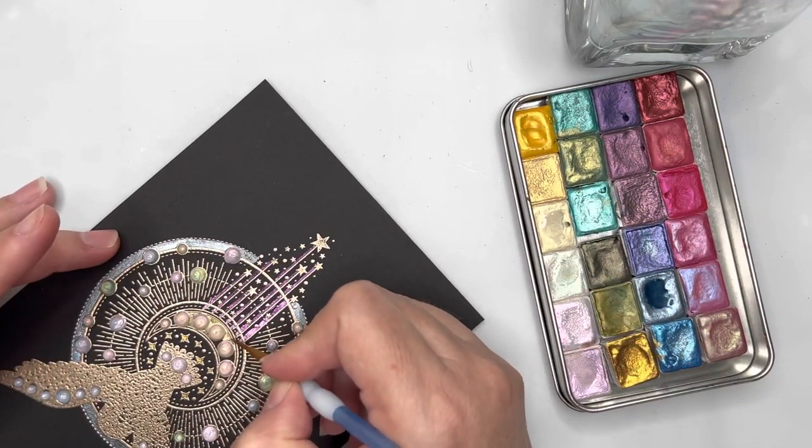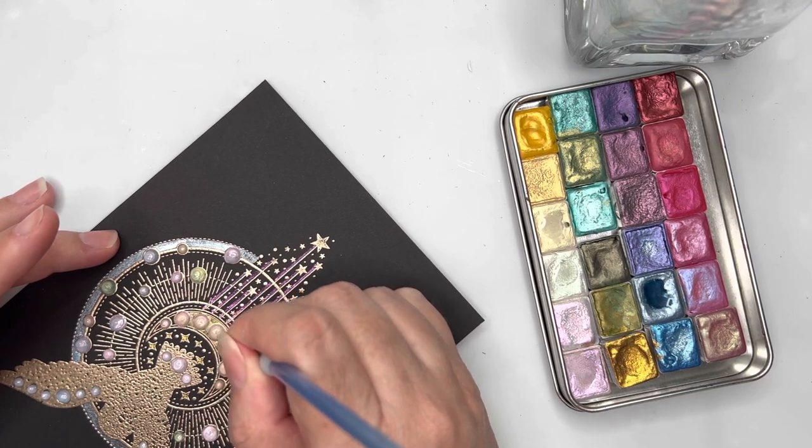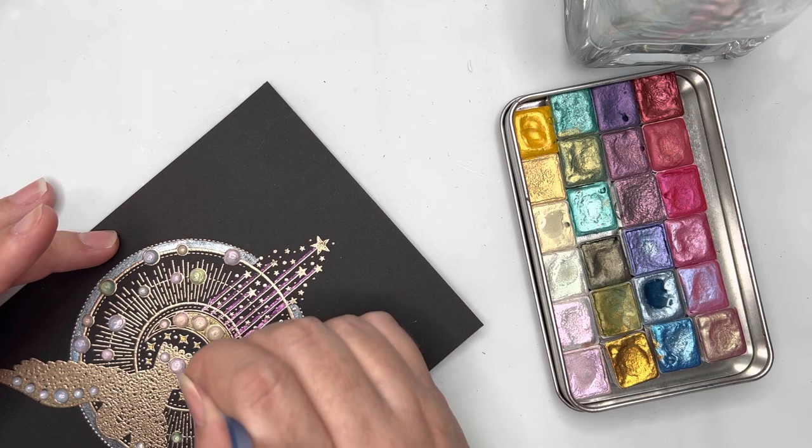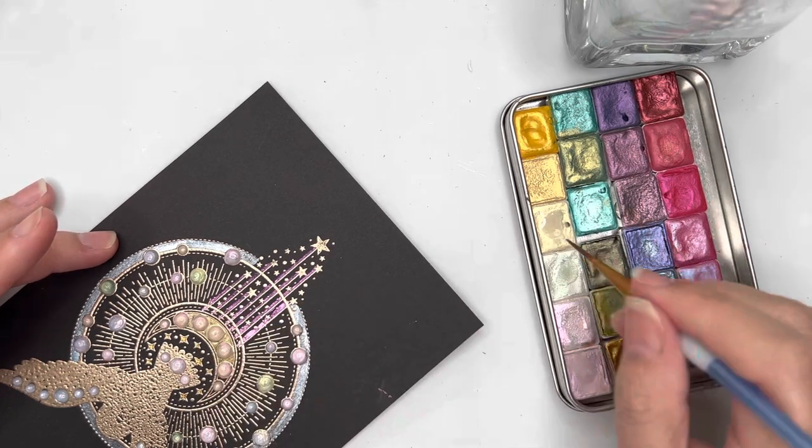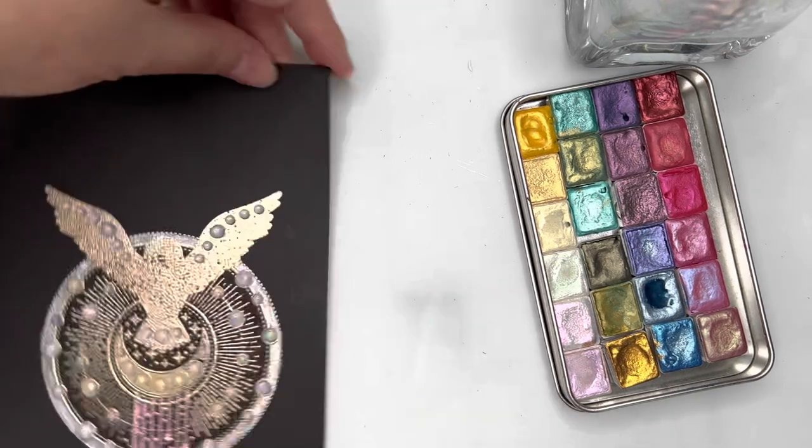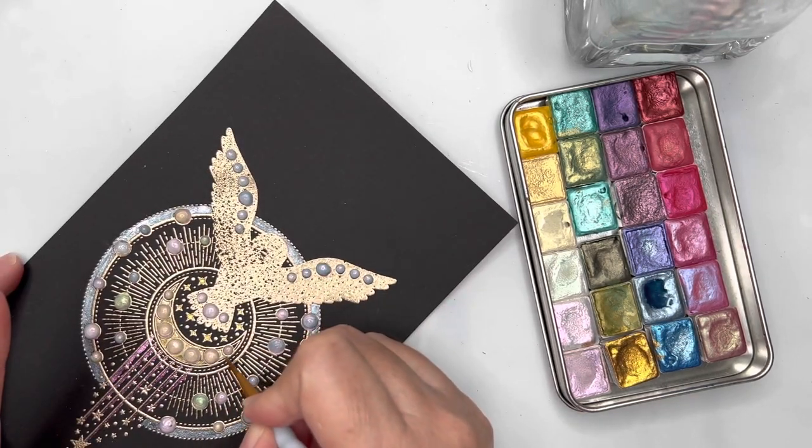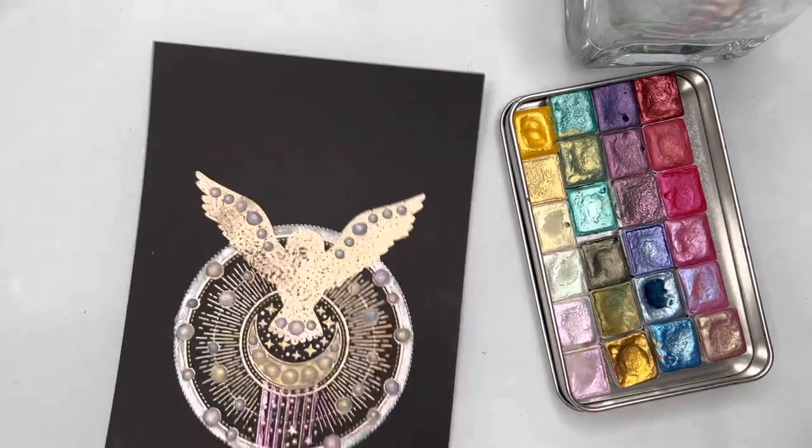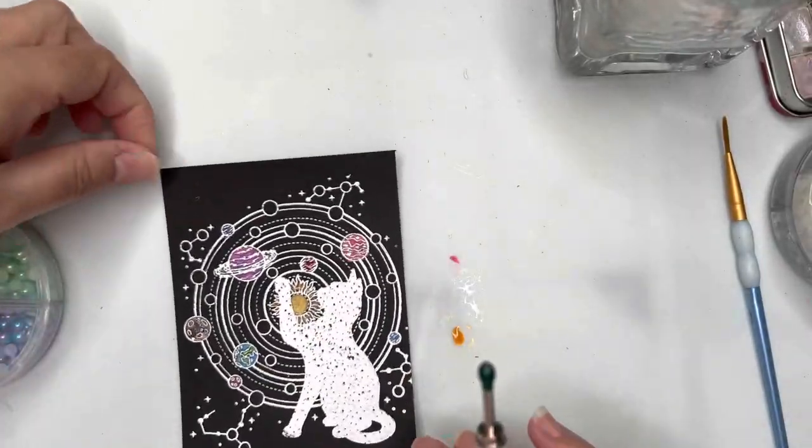So again I'm just coming in with that light gold pigmented paint and I'm going around the crescent shape of the moon. I'm trying to be as careful as possible because my Nuvo Drops are still setting, but once I'm happy there I'll have that finished.